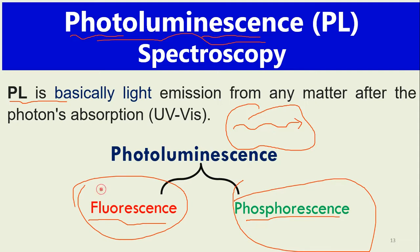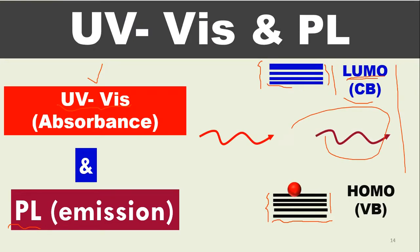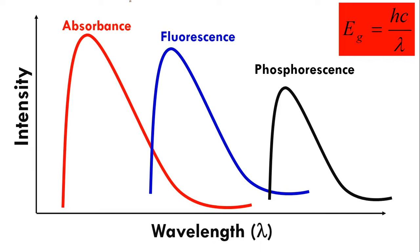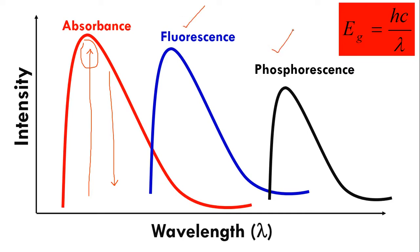Looking at this graph, the red curve represents absorbance — the material absorbs light and the electron excites from the ground state to the higher state, or from the valence band to the conduction band. Those electrons will then relax and come to the ground state in two ways: one is called fluorescence and another is called phosphorescence. There is a shift in wavelength because there are sub-levels — the electron loses some energy at each sub-level as it returns to the ground state.